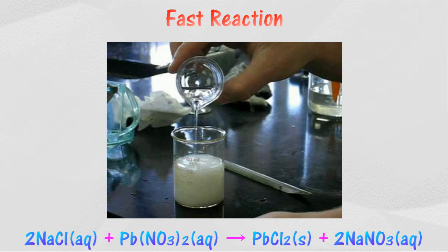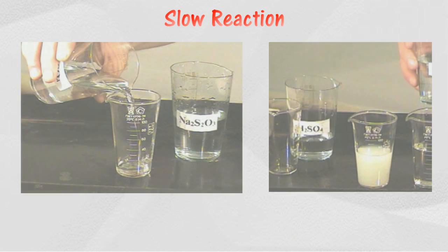Example of slow reaction: when dilute sulfuric acid is added to a solution of sodium thiosulfate, yellow sulfur precipitate is formed slowly.